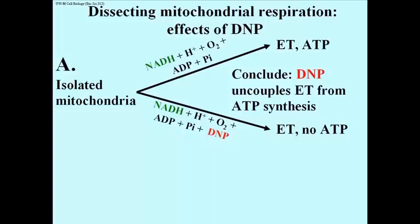Investigators concluded that DNP uncoupled electron transport from ATP synthesis. In other words, two processes were coupled, but were actually independent processes.